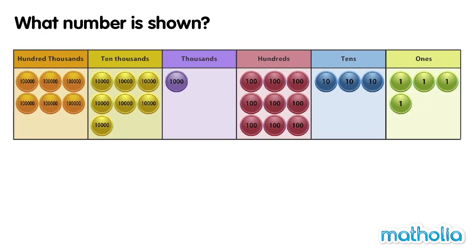What number is shown? Let's find the value of the counters in each place. In the 100,000s place, there are six counters. They have a value of 600,000. In the 10,000s place, there are seven counters. They have a value of 70,000.